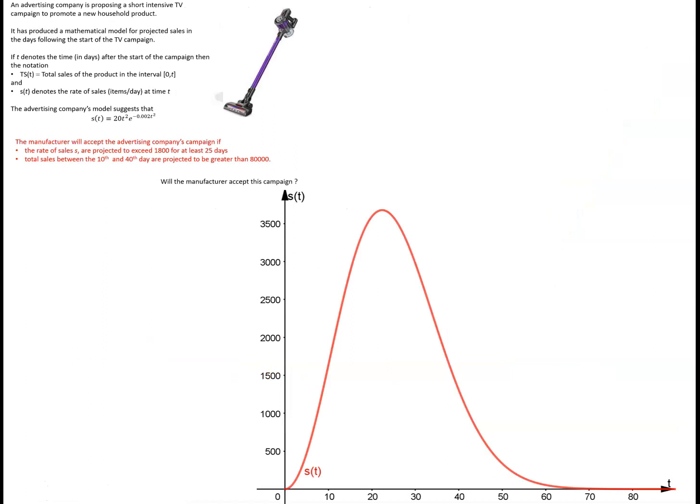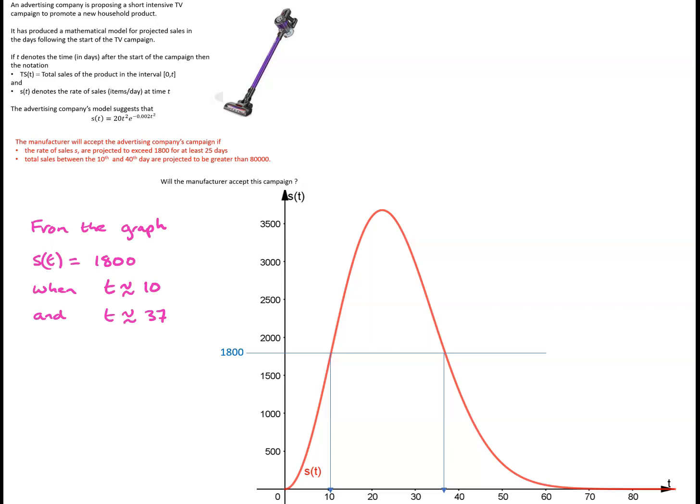On this slide we have produced a simple graph of s(t) against t. Looking at the condition that the rate of sales are projected to exceed 1,800 for at least 25 days, we can see whether this is roughly the case by putting a line across at 1,800 and seeing that s(t) equals 1,800 somewhere around t equals 10 and somewhere around t equals 37. So it certainly looks as if that first condition is satisfied, but we are only working very roughly at the moment.